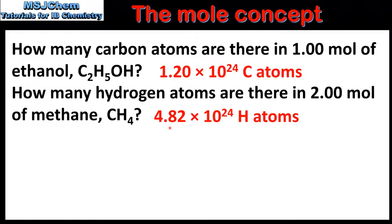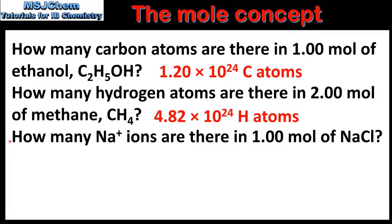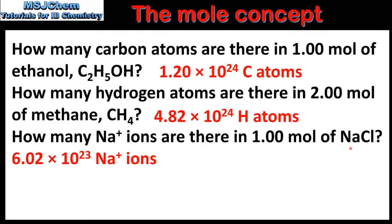The next question was: how many hydrogen atoms are there in 2 moles of methane? The answer is 4.82 x 10 to the 24 hydrogen atoms. One molecule of methane has 4 hydrogen atoms, so the calculation is 2 multiplied by 4 and then multiplied by the Avogadro constant. The third question is: how many sodium ions are there in one mole of sodium chloride? The answer is 6.02 x 10 to the 23 sodium ions. In one formula unit of sodium chloride the ratio of sodium to chloride ions is 1 to 1, so in 1 mole of sodium chloride we have 1 mole of sodium ions and 1 mole of chloride ions.